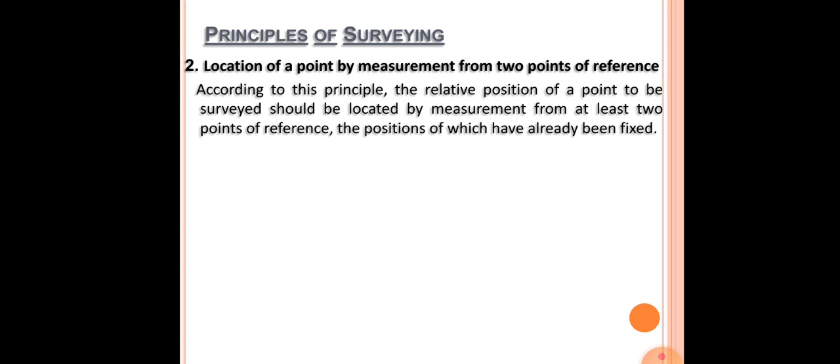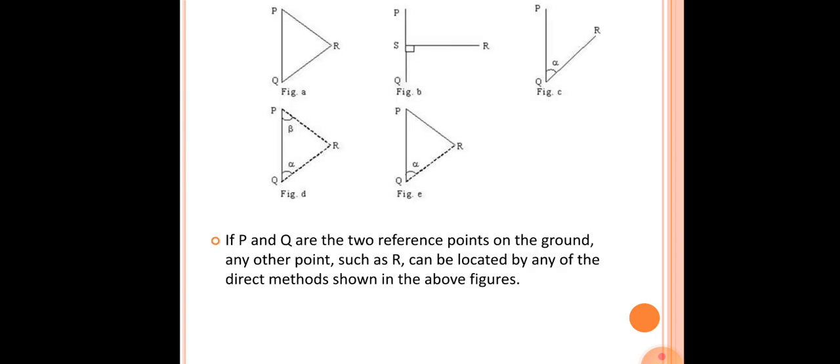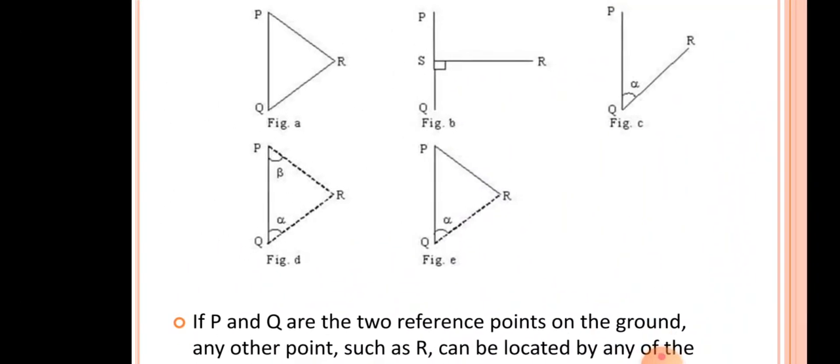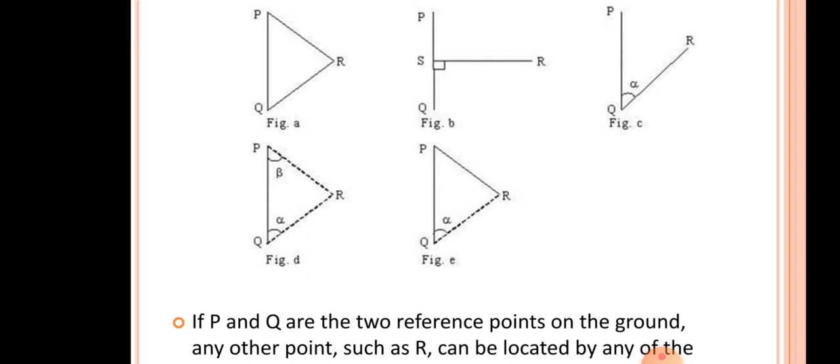The next principle is the location of a point by measurement from two points of reference. According to this principle, whenever we have to determine the relative position of a point, it has to be located by measurement from at least two points of reference. In this figure, you can see that P and Q are the two reference points on the ground. Suppose any other point like R has to be located — it can be located by any of the methods shown in the figure. By taking linear measurements or by taking angular measurements, we can find out the position of R.